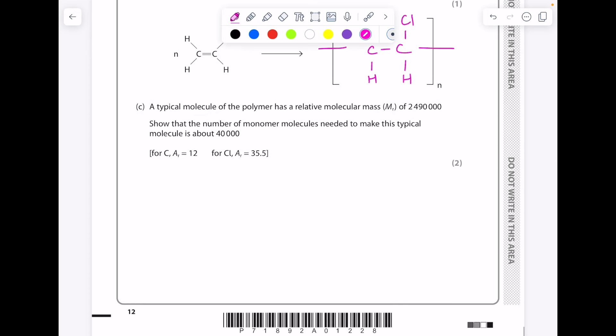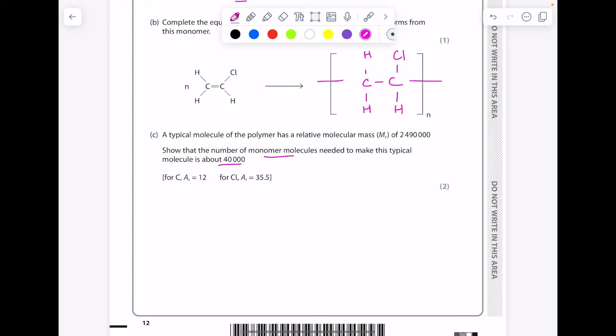The typical molecule of the polymer has a relative molecular mass of 2,490,000. Show that the number of monomer molecules needed to make this typical molecule is about 40,000. So work out the MR of the chloroethene: two lots of carbons, three lots of hydrogens, plus chlorine. And then we take the MR of the polymer, divide it by the MR of chloroethene to get 39,840, which is approximately 40,000, just so I know that my answer is right.